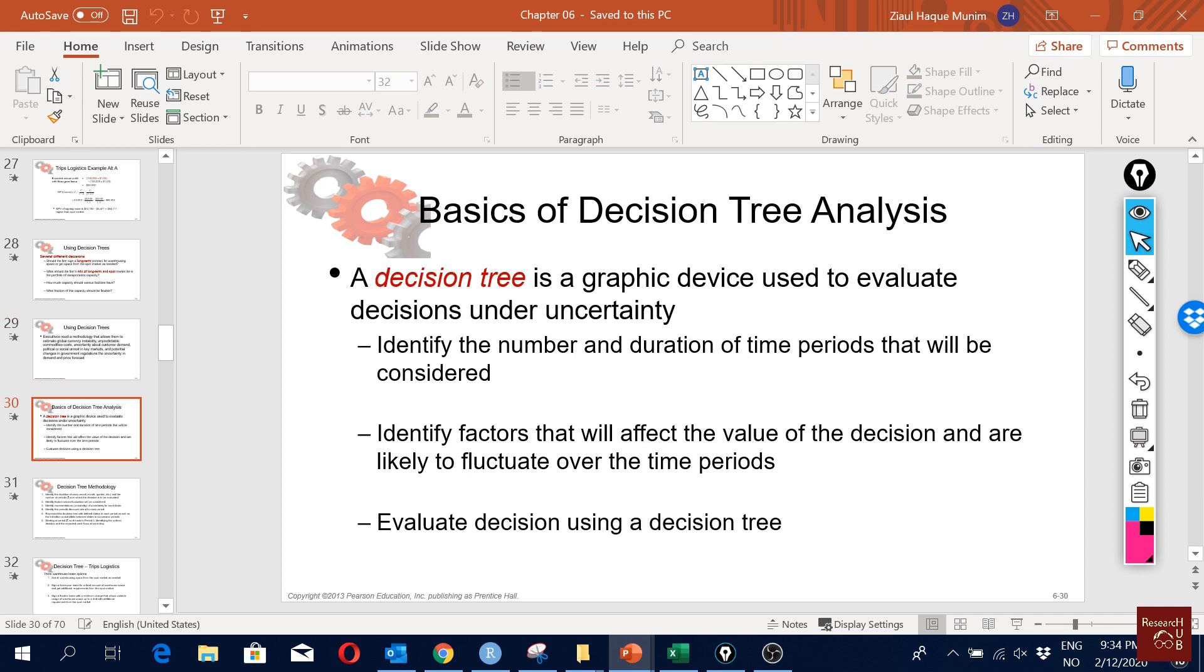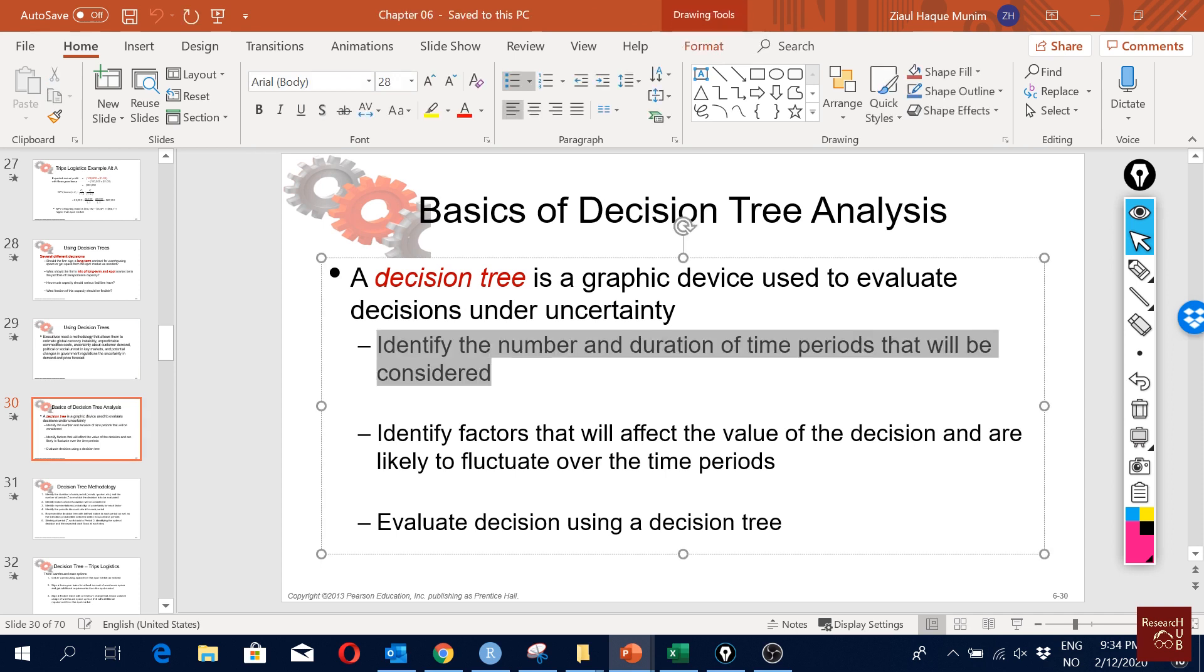Normally, a decision tree is a graphic device used to evaluate decisions under uncertainty. The first thing we have to do is identify the number and the duration of time periods. Considering two or three time periods is okay; after that it could be complex.